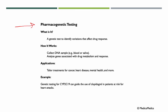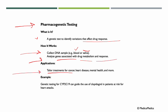Pharmacogenetic testing is a genetic test to identify variations that affect drug response. It works by collecting a DNA sample from blood or saliva and analyzing genes associated with drug metabolism and response. Applications include tailoring treatments for cancer, heart disease, mental health, and more. For example, genetic testing for CYP2C19 can guide the use of clopidogrel in patients at risk for heart attacks.